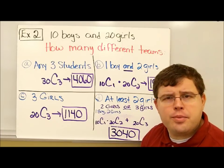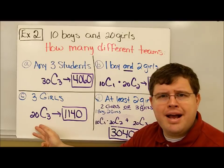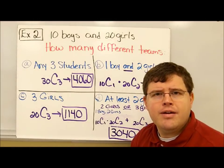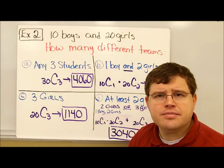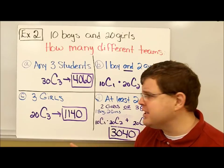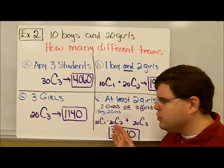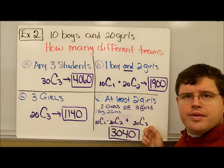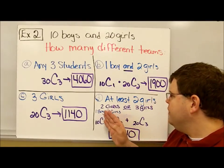If she decided she wanted three girls on the team, there's 20 girls, she wants three of them. 20C3, the order doesn't matter, gives us 1,140 different teams of three girls. Finally, let's suppose she wants a team that has at least two girls. At least two girls means two girls or more. So two girls or three girls. If she has a team of two girls, that means she has one boy and two girls: 10C1 times 20C2. Or, this is addition, three girls: 20C3. I plug that into the calculator and find there's 3,040 different teams that she can assemble that have at least two girls.